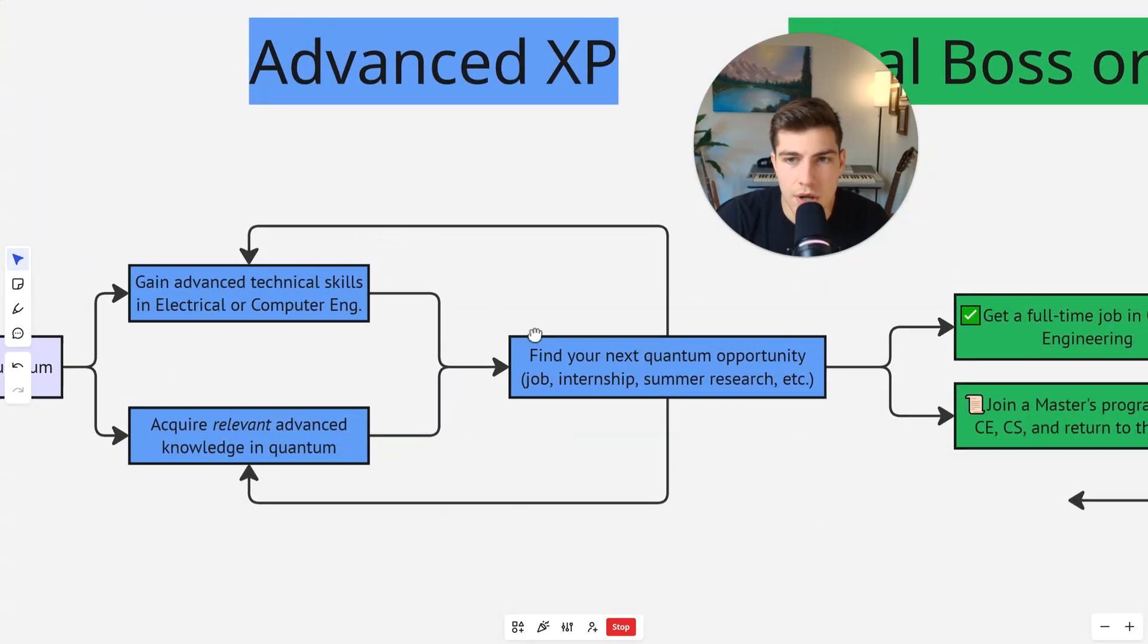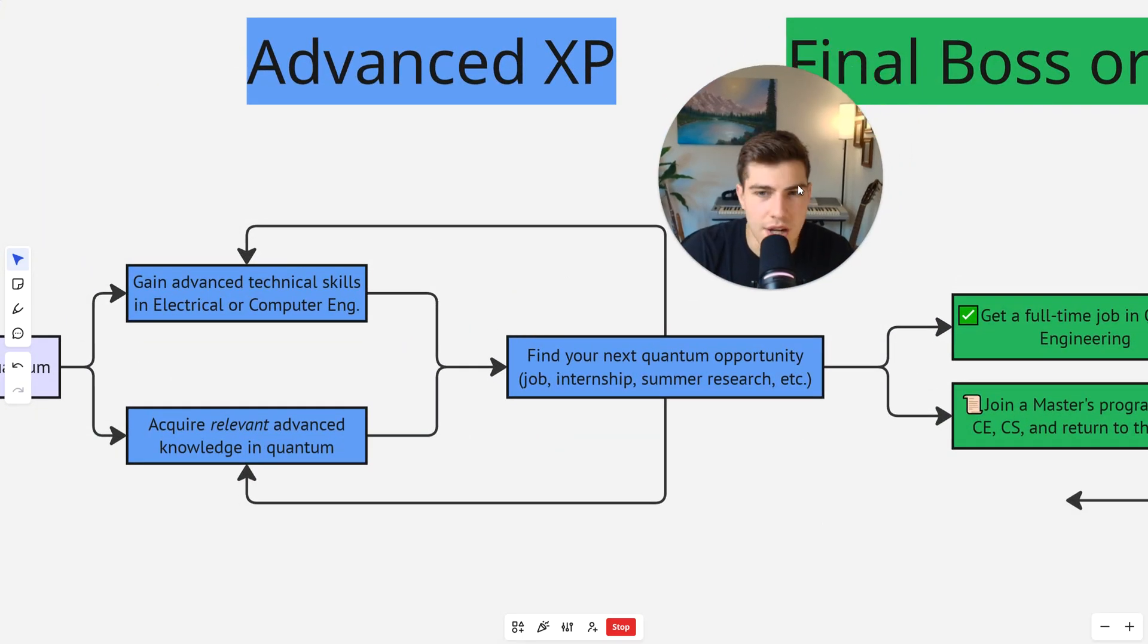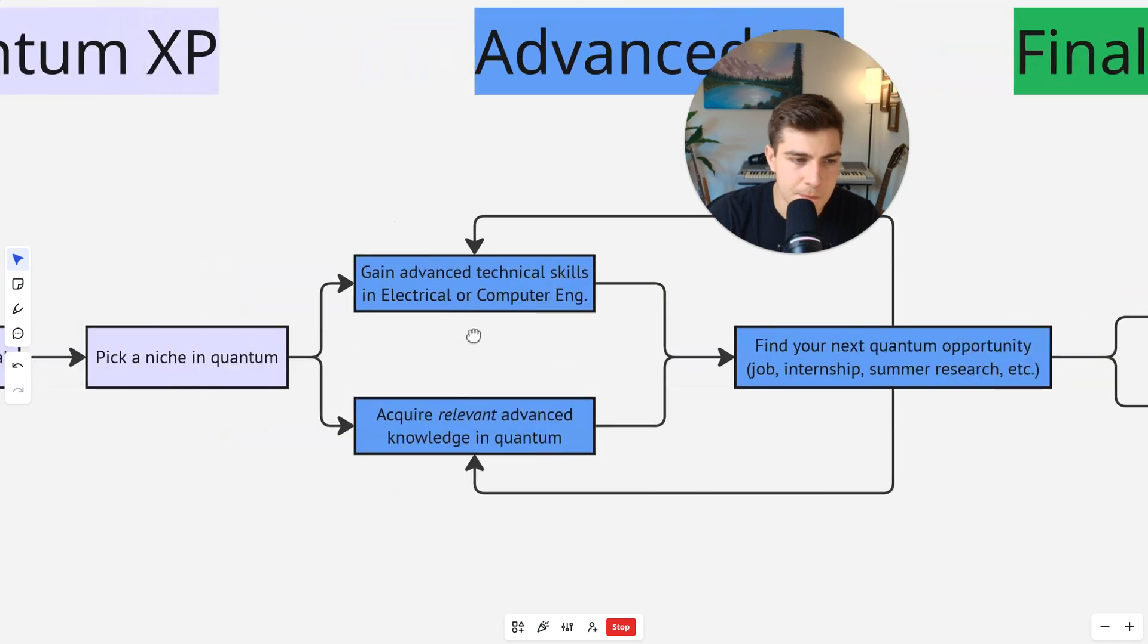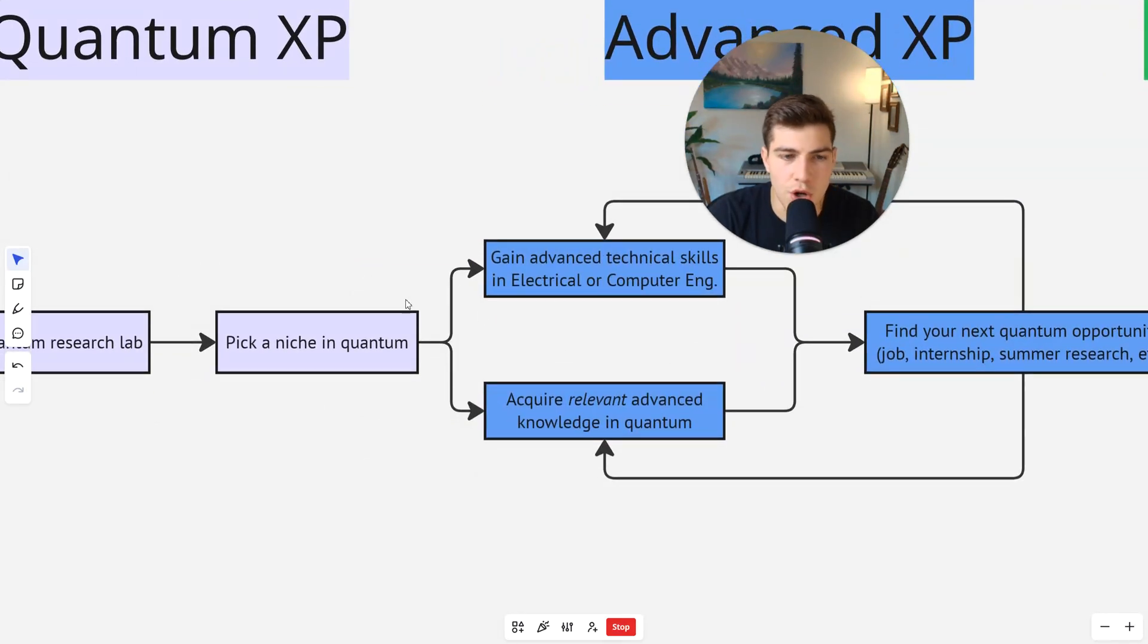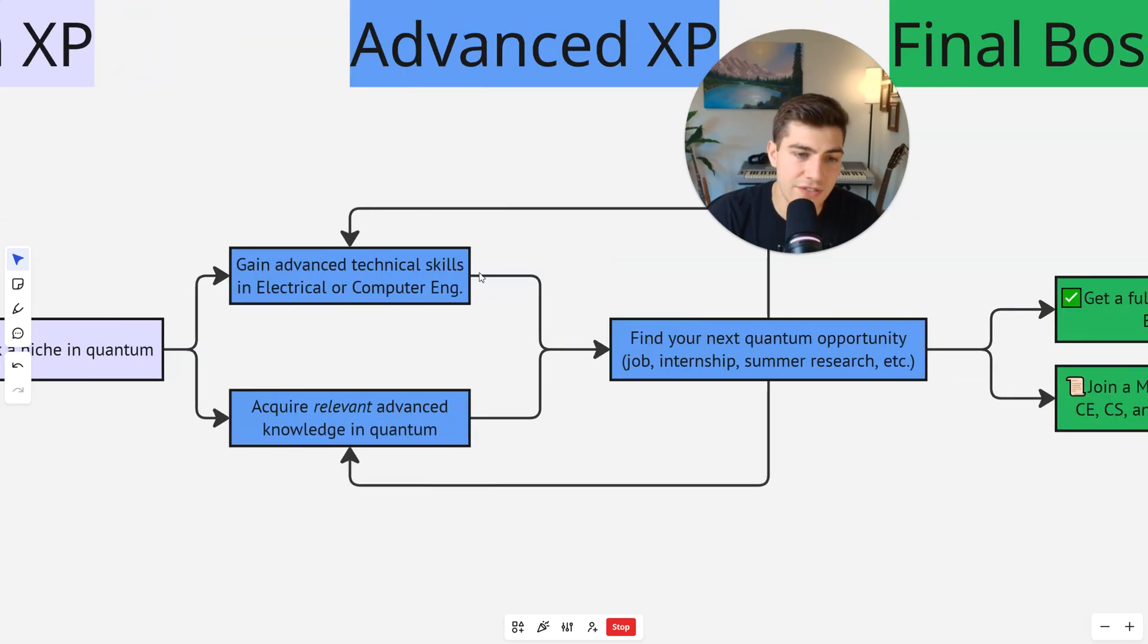Okay, now this is where you gain your final levels, your advanced experience. So once you have your niche and you know how to apply your technical skill to quantum computing, you're going to gain advanced technical skills in your electrical and computer engineering by taking advanced classes or maybe even doing an electrical engineering internship at some point. Don't just take easy classes. Take stuff that's actually relevant in the skills that you enjoy doing and the skills that are valuable to quantum computing.